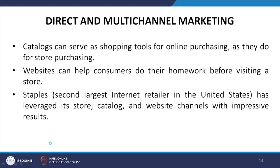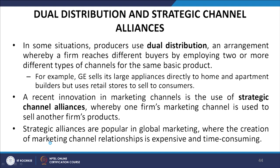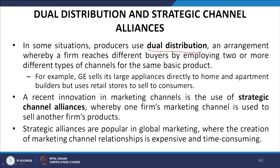In dual distribution, a firm reaches different buyers by employing two or more different types of channels for the same basic product. For example, GE sells large appliances directly to home and apartment builders but uses retail stores to sell to consumers. A recent innovation is strategic channel alliances, whereby one firm's marketing channel is used to sell another firm's products — popular in global marketing where creating channel relationships is expensive and time-consuming.